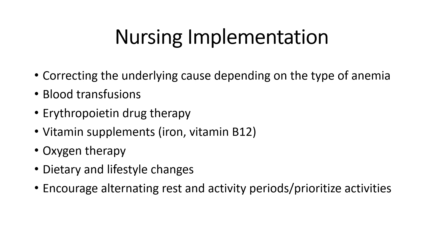As nurses, we correct the underlying cause — figure out why the patient is anemic. Is there acute or chronic blood loss? Do they need a blood transfusion? Is erythropoietin decreased — do they need erythropoietin drug therapy? Are they deficient in iron or vitamin B12? Give oxygen therapy as needed, make dietary and lifestyle changes, and encourage adequate rest balanced with activity.